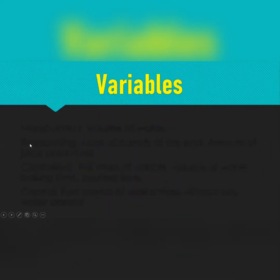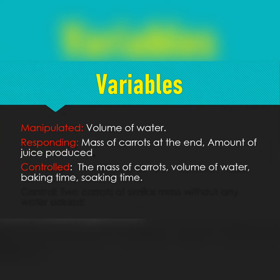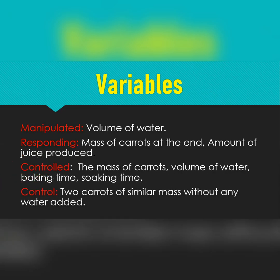Your variables are the things that affect your results. The manipulated variable — what we're changing — is the volume of water added. The responding variable is the mass of the carrots at the end, or the amount of juice produced. Controlled variables — what we keep constant — include the mass of the carrots, the volume of water, baking time, and soaking time, so the experiment is fair. The control is two carrots of similar mass with no water added, which is what we compare our results to.